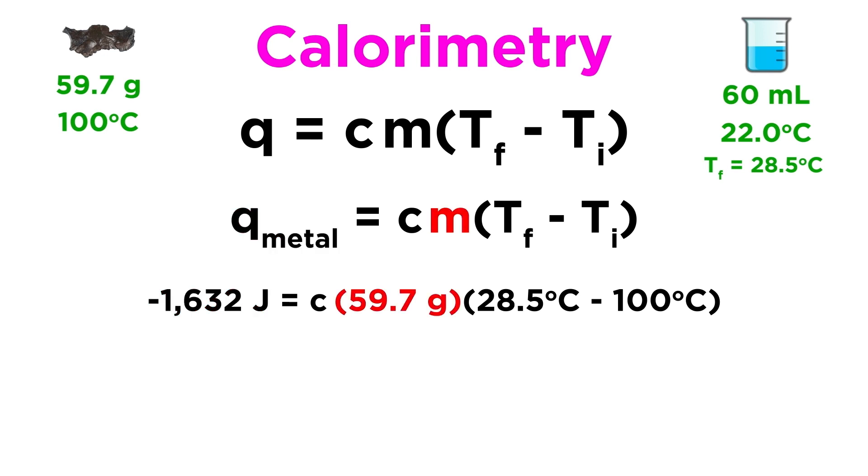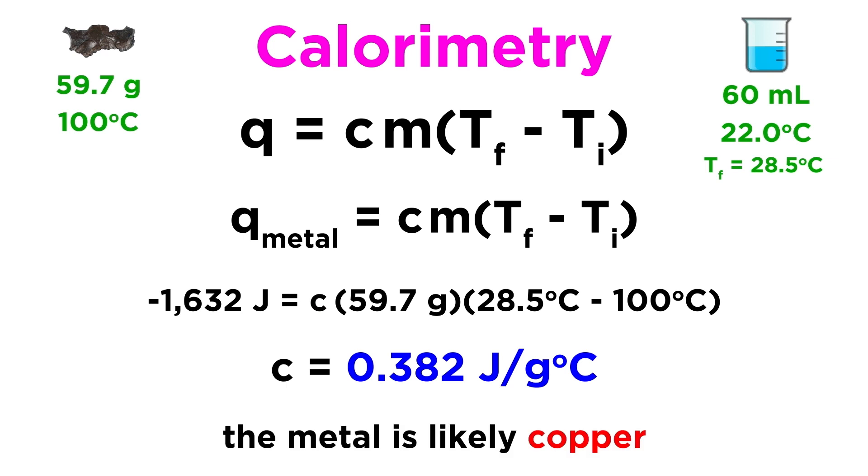So let's write a new equation using the q metal we just calculated. This time we have the mass of the unknown metal, and the temperature change experienced by the metal, and the only unknown will be the specific heat of the metal. Doing the math we should get 0.382 joules per gram degree Celsius, as the specific heat of the metal. If we take a look at our list of specific heats, we might notice that the tabulated specific heat for copper is extremely close to the value we just calculated for our unknown metal, making it very likely that this was a piece of copper.